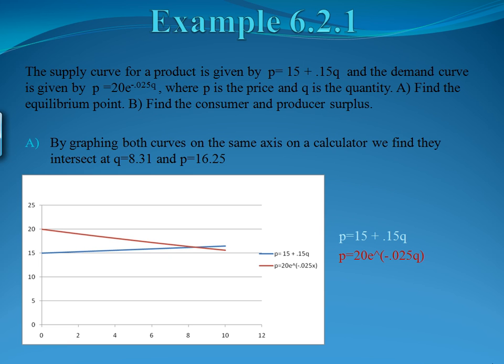By graphing both curves on the same axis on a calculator, we can find where they intersect. You can do this on your calculator by using the graph function, and then use the trace function to find their intersection point. You'll find that they intersect at the x value of 8.31 and the y value of 16.25. Knowing that our quantity is represented on the x-axis and our y value is the price, we now have an equilibrium point of q equals 8.31 and p equals 16.25.